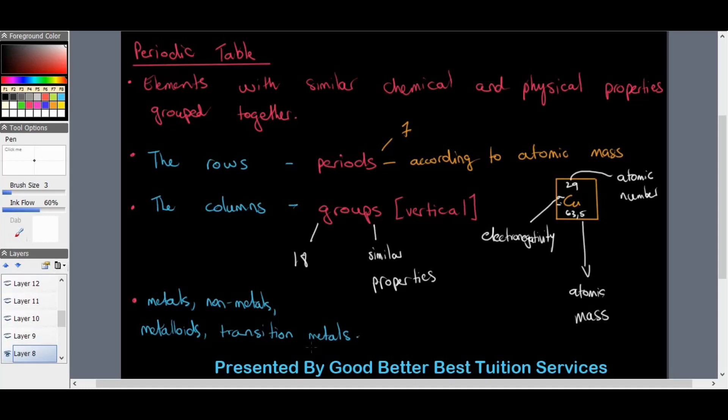The periodic table consists of rows and columns and they have their own names. The rows on a periodic table are called periods and they are grouped according to their atomic mass. The number seven refers to the number of periods that are actually present on the periodic table.